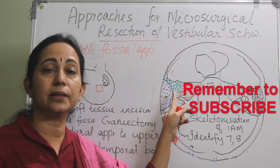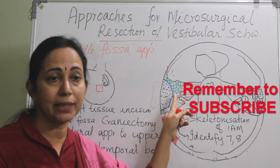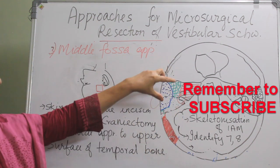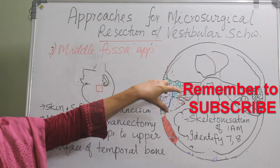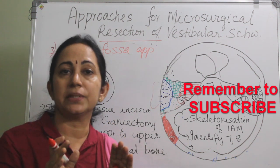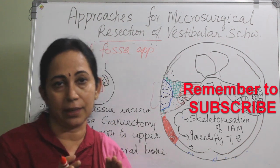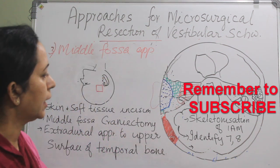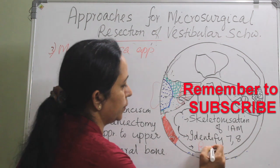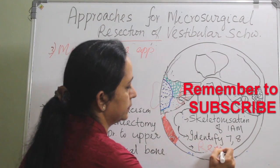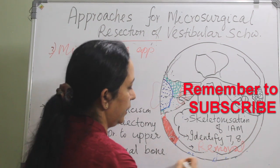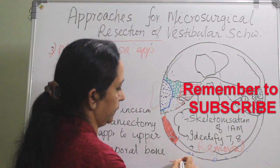We can then identify the 7th and 8th cranial nerves. The tumour is identified and dissected out from the 7th and 8th cranial nerves, followed by removal of the tumour and then closure.